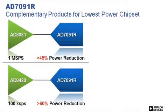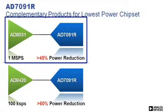When coupled with low power amplifiers, the AD7091R is part of a chipset that reduces overall signal chain power dissipation. When used with the AD8031 amplifier, power is reduced by greater than 45% compared to previous offerings.